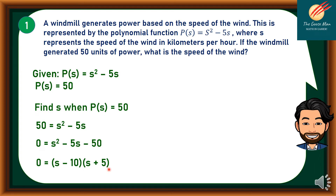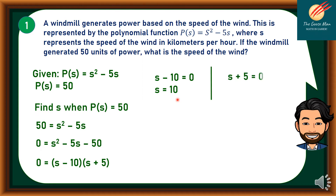So 0 = (s − 10)(s + 5). We will get the values of s. If s − 10 = 0, adding both sides by 10, s = 10. On the other hand, if s + 5 = 0, subtracting both sides by 5, s = −5. Since we cannot have a negative speed of the wind, we will consider only s = 10.